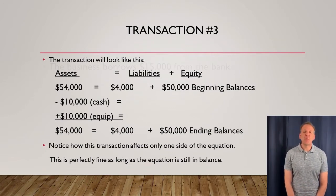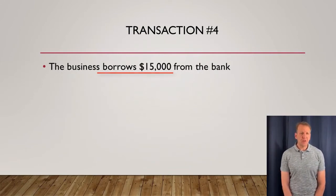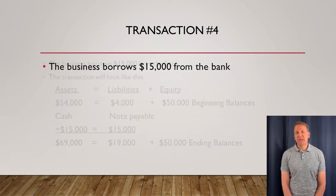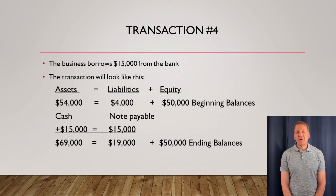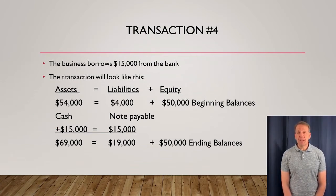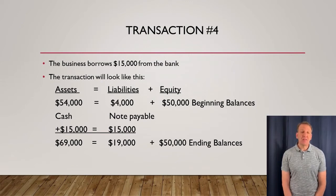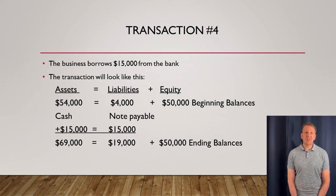Let's move on to transaction number four. In this transaction, the business is borrowing $15,000 in cash from the bank. There are two things taking place: the business is receiving $15,000 in cash, so cash is increasing. Then also, on the other side of the accounting equation, our liabilities are increasing because the business now owes $15,000 more to another entity — the bank. So the accounting equation is in balance: $15,000 equals $15,000 with regards to this transaction.